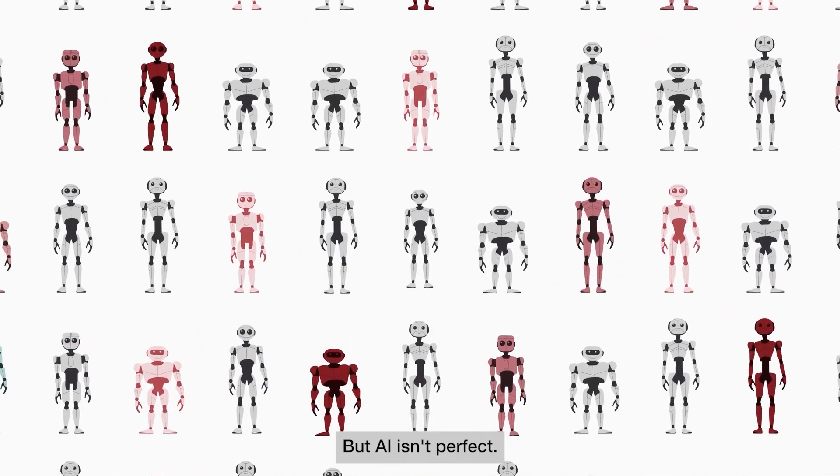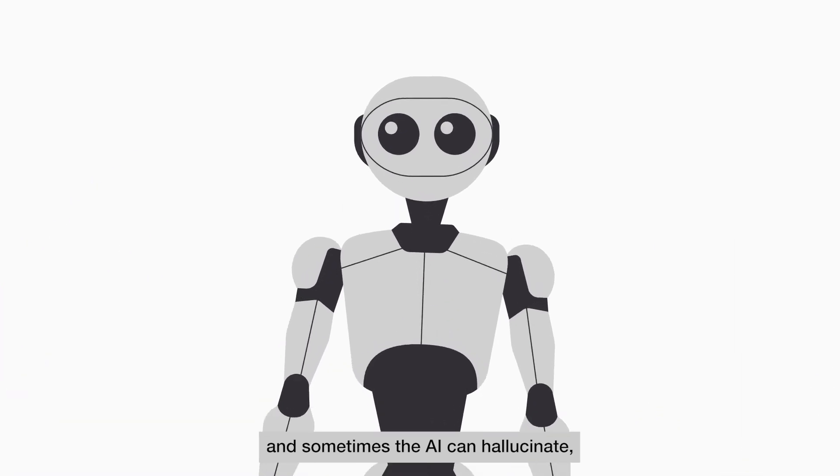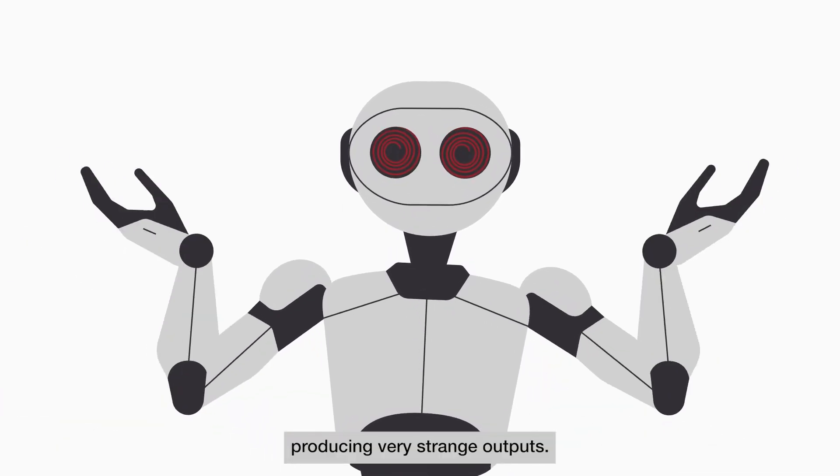But AI isn't perfect. Training data can introduce hidden biases and sometimes the AI can hallucinate, producing very strange outputs.